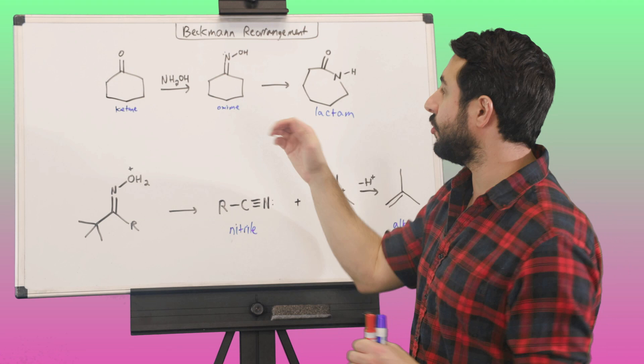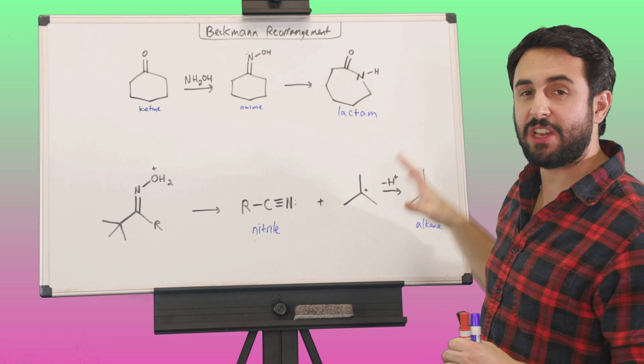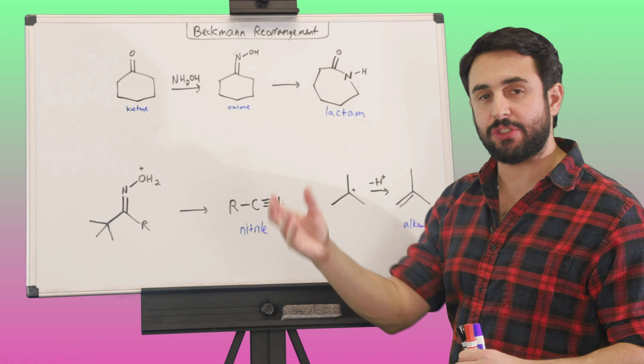...remember that we're inserting that nitrogen, right, this is going to pop out and the nitrogen is going to end up in the ring. And so, what we end up with is a cyclic amide, and just an interesting bit of information, a cyclic amide is called a lactam. Just like a cyclic ester is called a lactone, similar terminology is for a cyclic amide, we're going to call that a lactam.